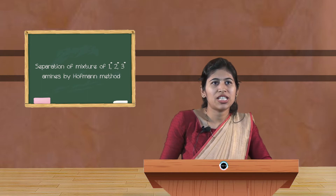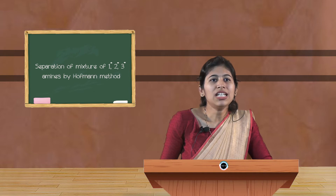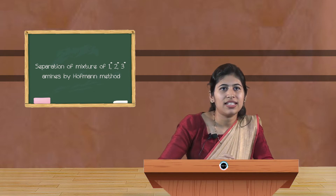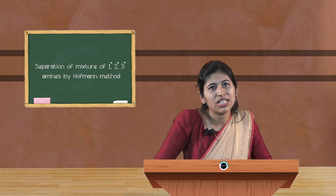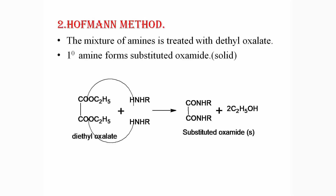In the Hofmann method, we use the Hofmann reagent, which is diethyl oxalate (also commonly called the Hofmann reagent). When we treat a mixture of the three amines with diethyl oxalate, it reacts with primary, secondary, and tertiary amines in different ways.